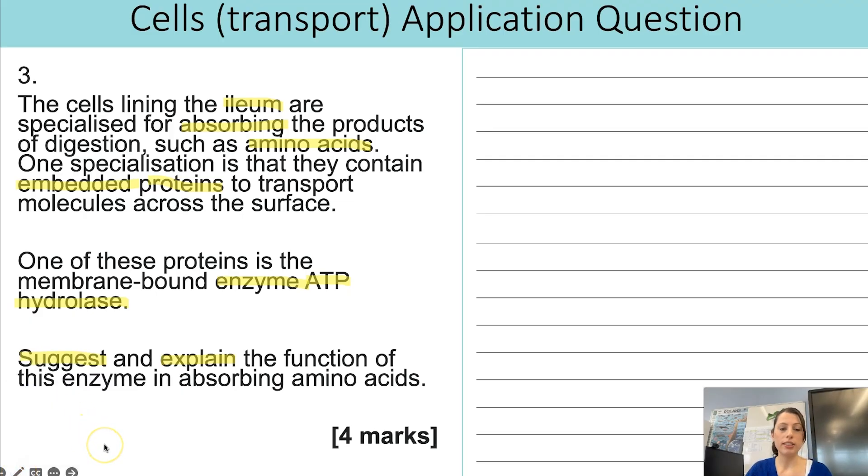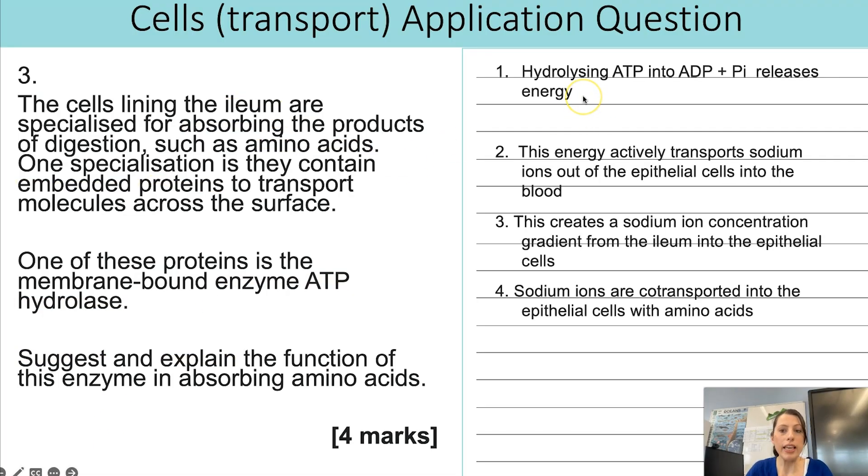So the first thing then I'm going to say what the role is. The role of ATP hydrolase is something that you should know from biological molecules. It hydrolyzes ATP and that means it's going to be converted into ADP and Pi and releases energy. So the key idea there is it hydrolyzes ATP to release energy. So that's the first bit of the question. Suggest what the enzyme is doing. Now we need to explain why that energy is so important in absorbing amino acids.